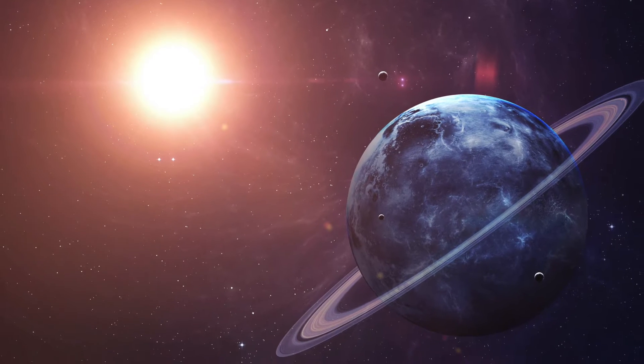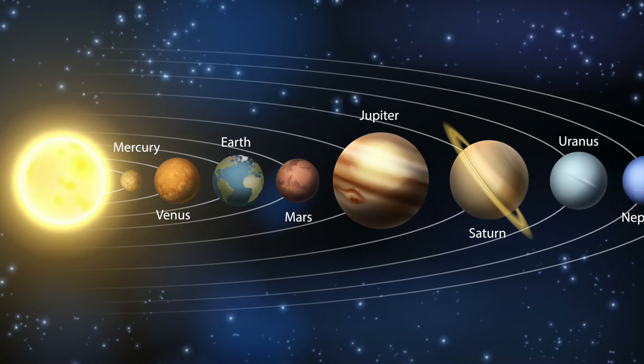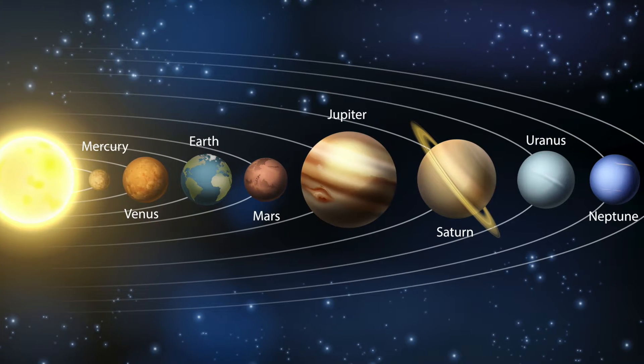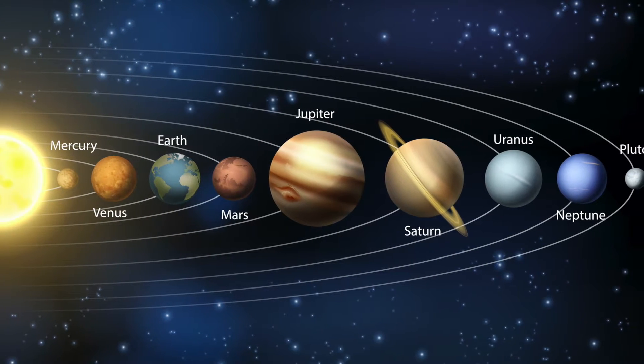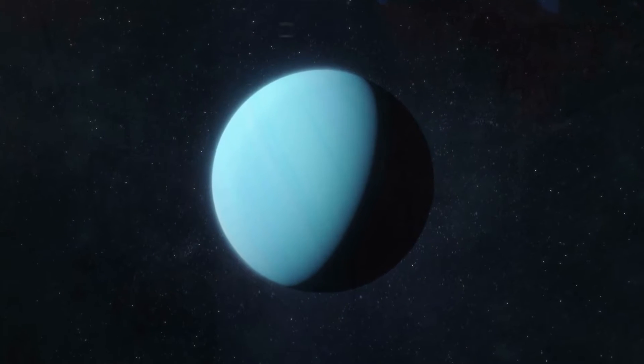Uranus was the first planet that scientists could locate with a telescope. Herschel and his colleagues first looked at what is now the seventh planet from the Sun as a comet or a star. The blue-green ice giant has confronted science with many puzzles.